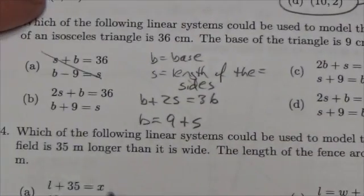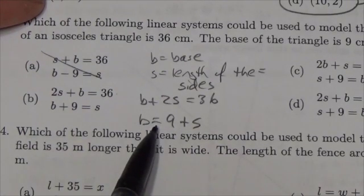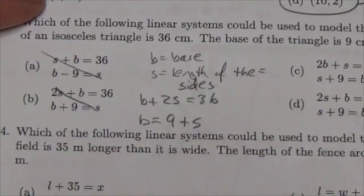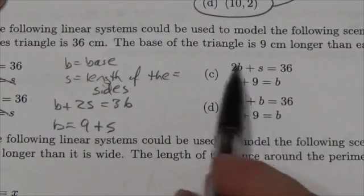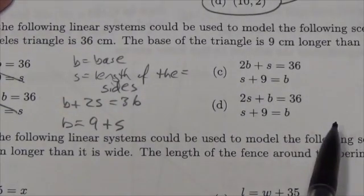So let's just take a quick look here. B is equal to nine plus S, well if I bring that over, that would be B minus nine equals S. Well, that's not this one. That one is good here. Nine plus S, S plus nine, that's the same thing.